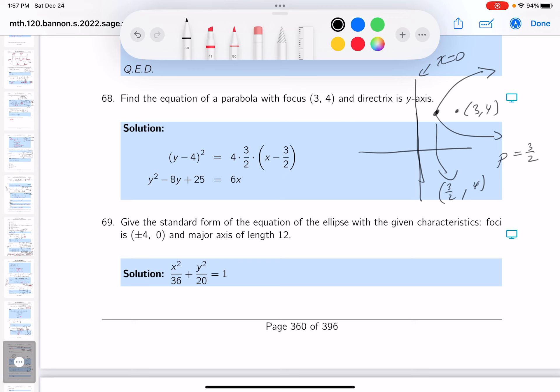What do you get? Let's take a look. y minus 4 squared equals 4 times p. Well, the p is 3 halves. And then x minus 3 halves. Standard form of a parabola, by the way.